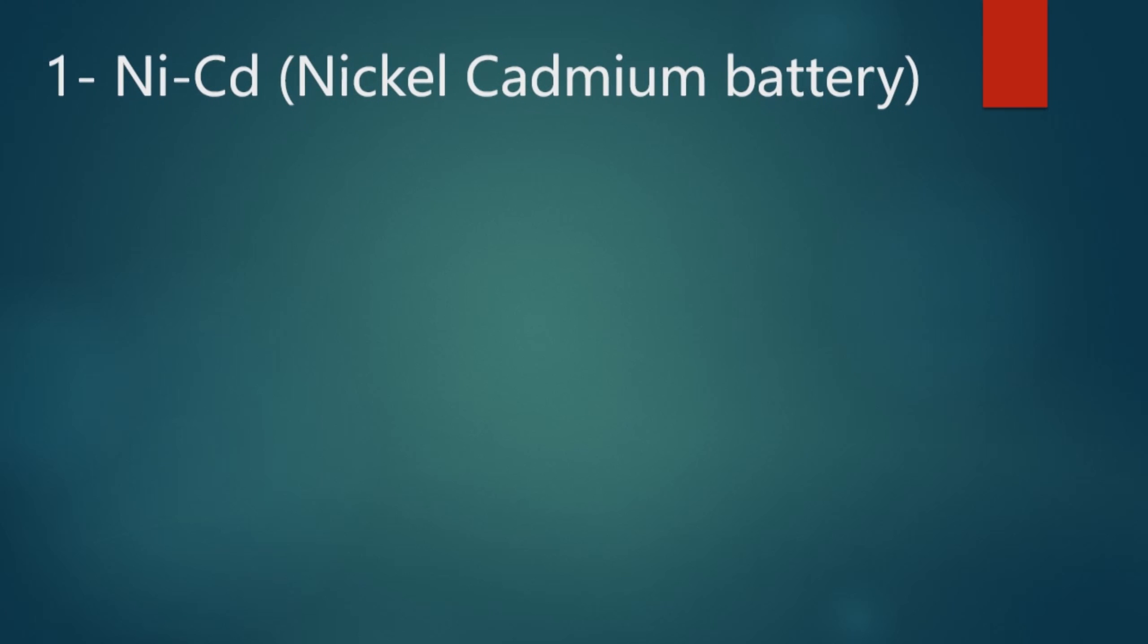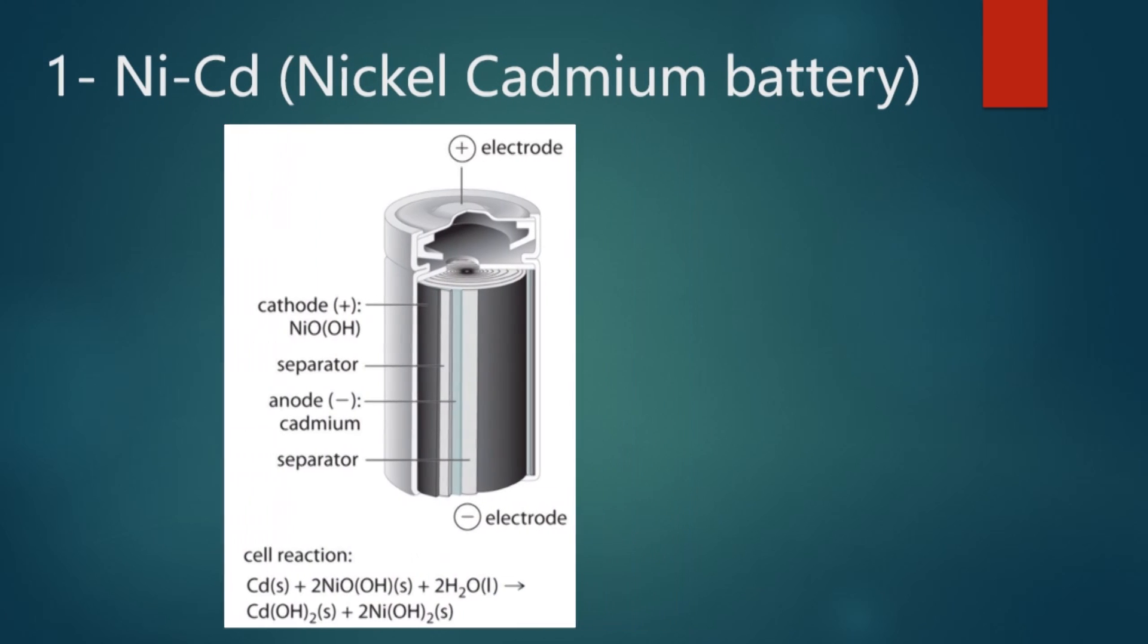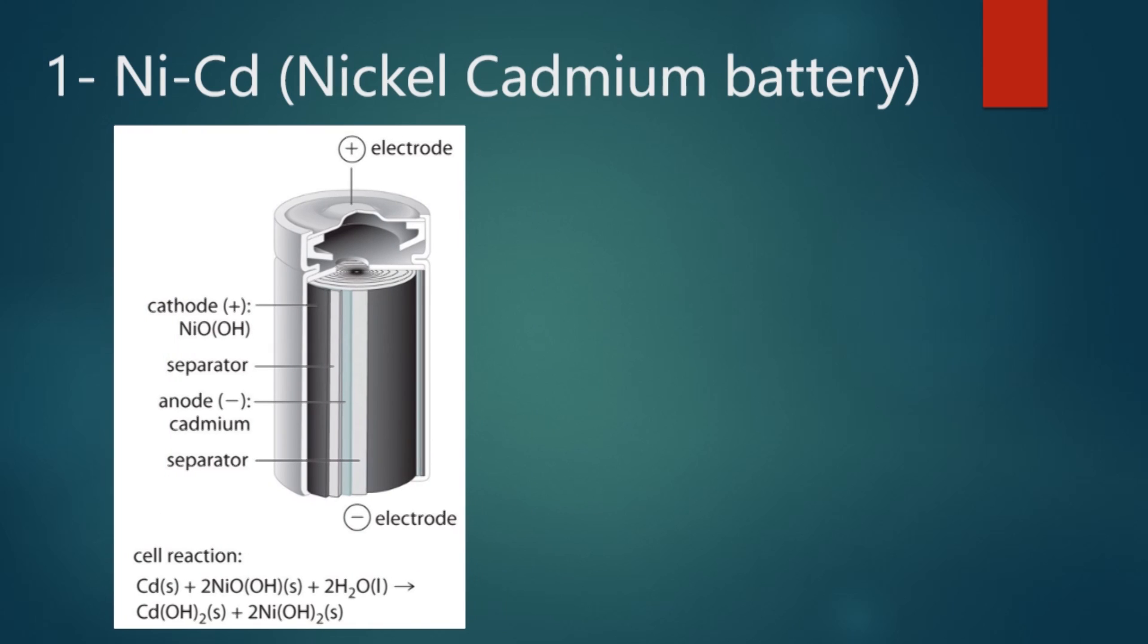The active components of a rechargeable nickel-cadmium battery are nickel hydroxide at the cathode and cadmium at the anode. For the electrolyte, usually potassium hydroxide is used due to their low internal resistance and very good current conducting properties.